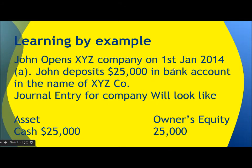Let's do an example. John opens XYZ Company on January 1st, 2014 and deposits $25,000 in a bank account in the name of XYZ Company. Since he deposited $25,000 to the company, this $25,000 becomes an asset — specifically cash. On the other side of the equation, since there is no liability, this $25,000 also becomes the owner's equity.